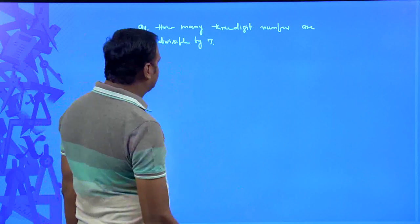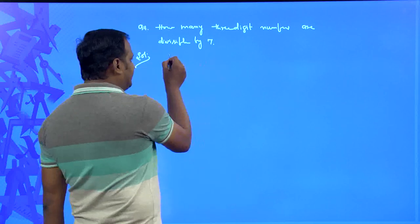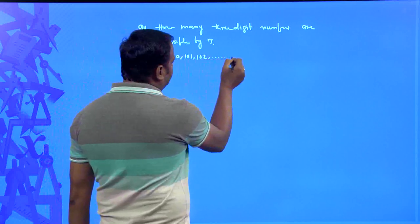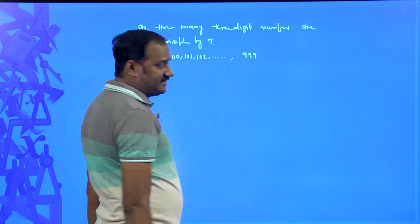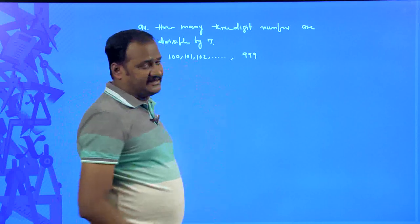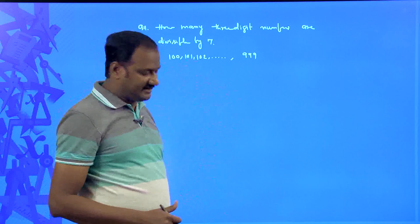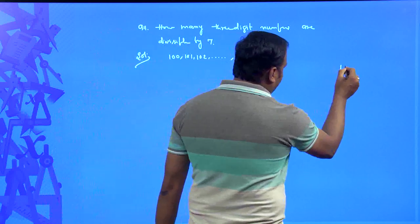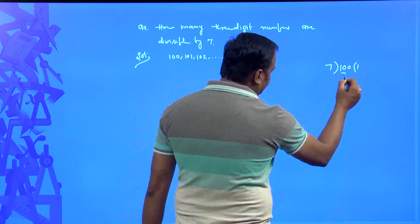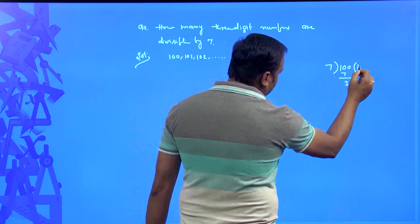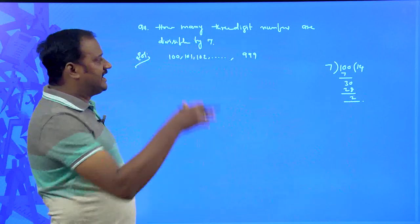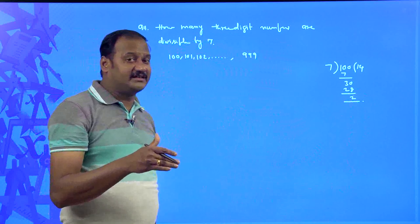Three-digit numbers start from 100 and go up to 999. Out of these, we need to identify which numbers are divisible by 7. To find the first such number, let us divide 100 by 7. 7 ones are 7, 7 fours are 28 — the remainder is 2. A remainder of 2 means 100 minus 2, which is 98, is divisible by 7.